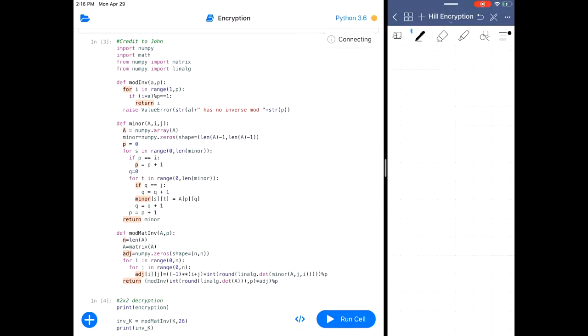So in the encryption process, we took our various inputs, a and b, converted them into numbers, n1 and n2, and then had those multiplied by our matrix, k, to get new values, n1 and n2 prime, which were then converted back into letters, a prime and b prime.